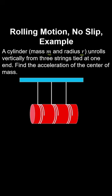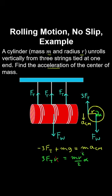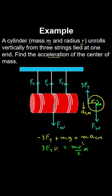A cylinder of mass m and radius R unrolls vertically from three strings tied at one end. Taking a free body of the cylinder, we have the tension forces in the strings and the force of weight. Applying Newton's second law for translation gives the acceleration of the centre of mass. Applying the rotational analogue gives an expression for angular acceleration. Dividing by R and adding the equations, and applying the no-slip condition relating the acceleration of the centre of mass to angular acceleration, allows us to solve for the acceleration.